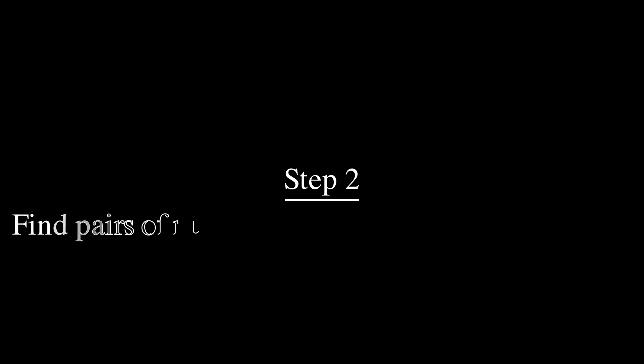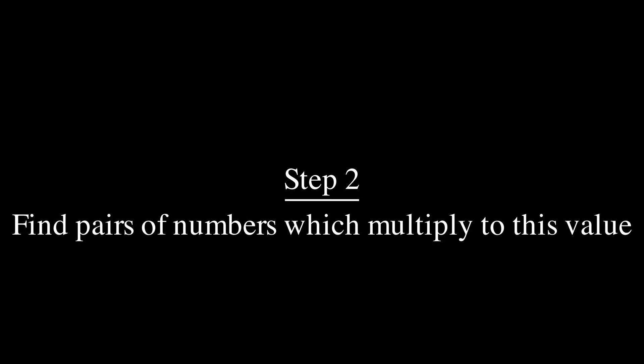Step two is to try to find all of the pairs which multiply to this number. Now it turns out you don't really need to find all of them, but go ahead and write down as many numbers as you can that multiply to the magenta value for now. Pause the video and resume when you're ready to continue. Okay, here's what I came up with.